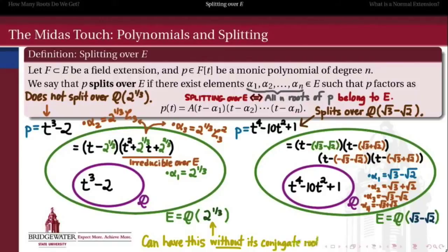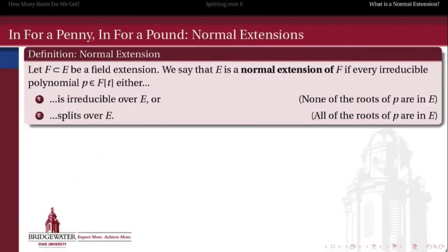So the moral of the story is: we can bring 2^(1/3) into an extended field of the rationals without bringing along its conjugate roots — without bringing along the other roots of the polynomial of which 2^(1/3) is minimal. But √3 - √2 does not have that property. When it comes to the party, it brings all of its friends with it. We cannot have √3 - √2 without also having its conjugate roots in an extended field. The definition is: a normal extension of a field is one in which every polynomial either is irreducible or splits completely — in for a penny, in for a pound.